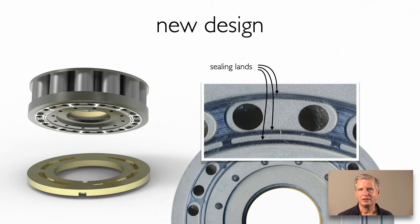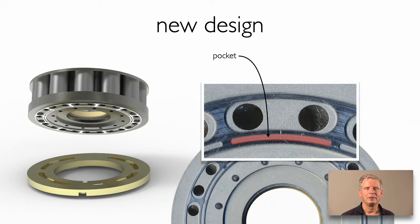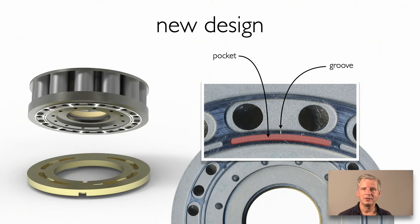But the sealing land on the inner diameter is split into two areas by a recessed area which we call a pocket. The most important design feature in this new design is a small groove which connects the barrel port to the pocket. This groove is needed to create a pressure in the pocket which becomes dependent on the gap height itself. The groove has a width of about 150 micron and a depth of about 75 micron.